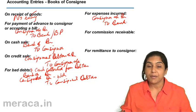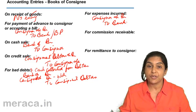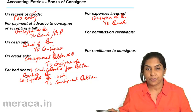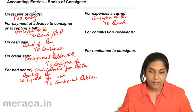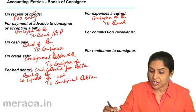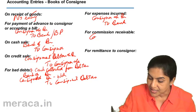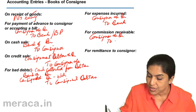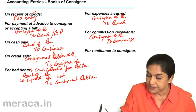For commission which is receivable: commission is an income, so commission income would be credited. Who is supposed to pay the commission? The consigner. So the entry is consigner account debit to commission income — commission receivable.